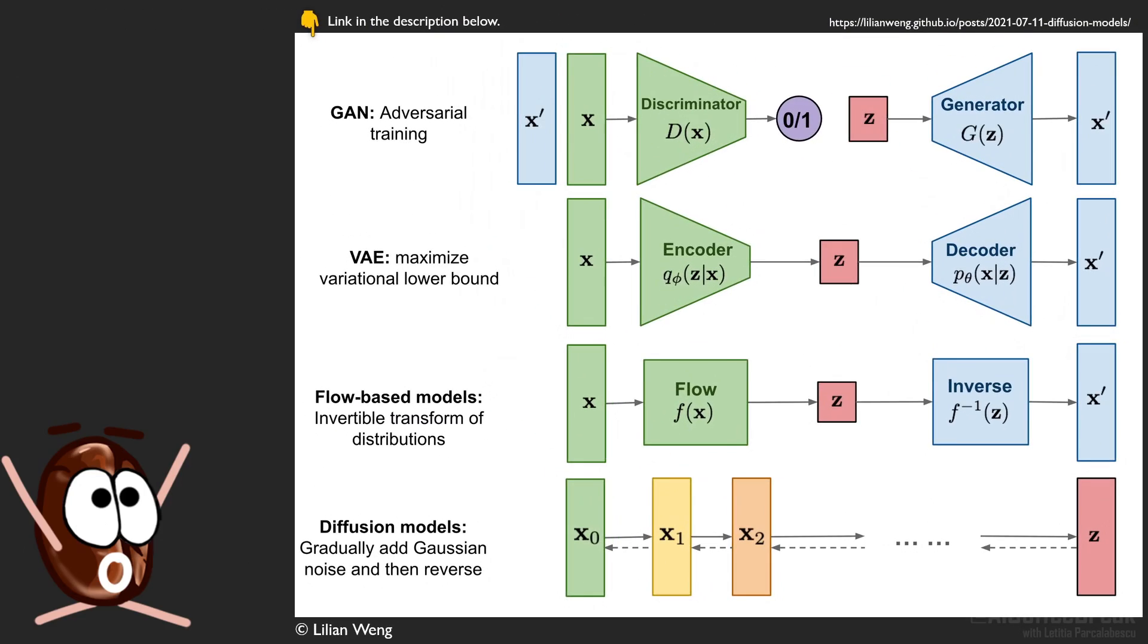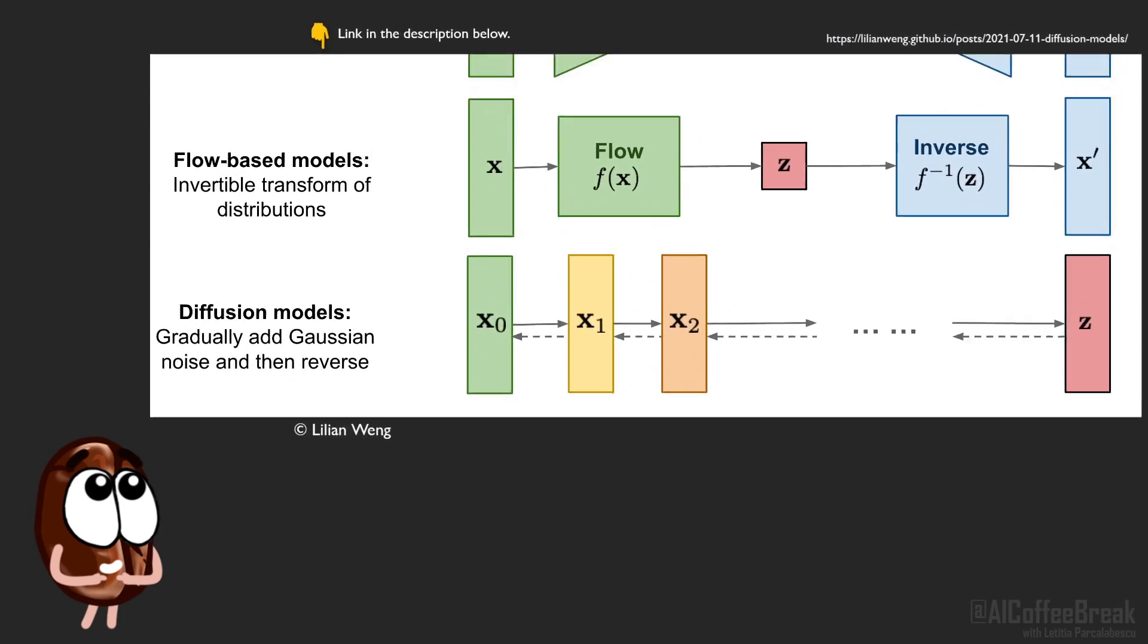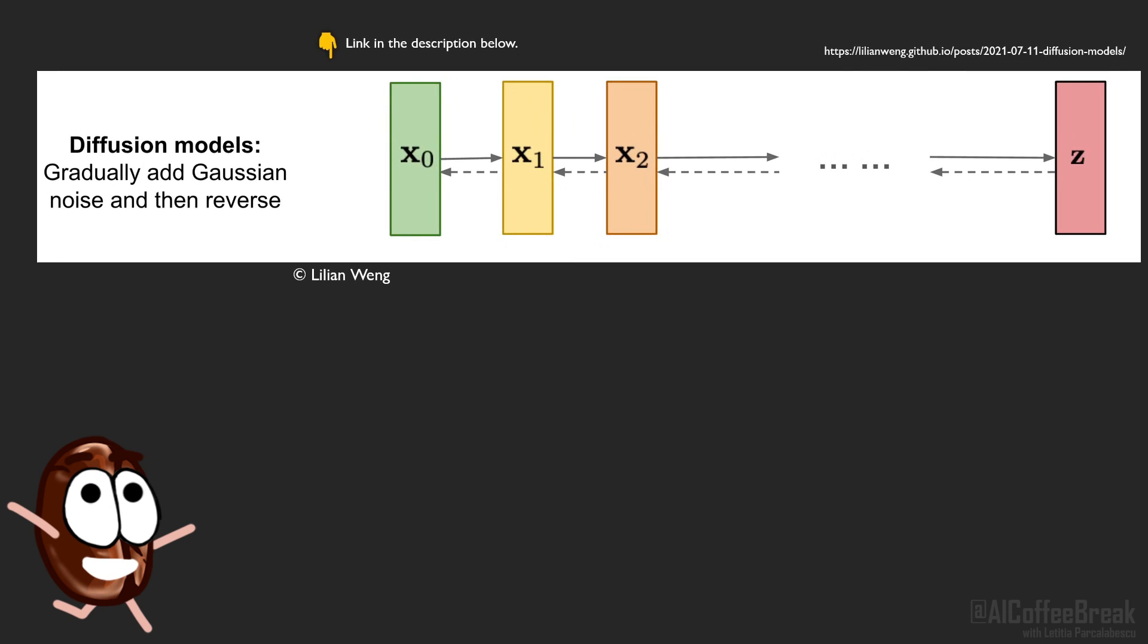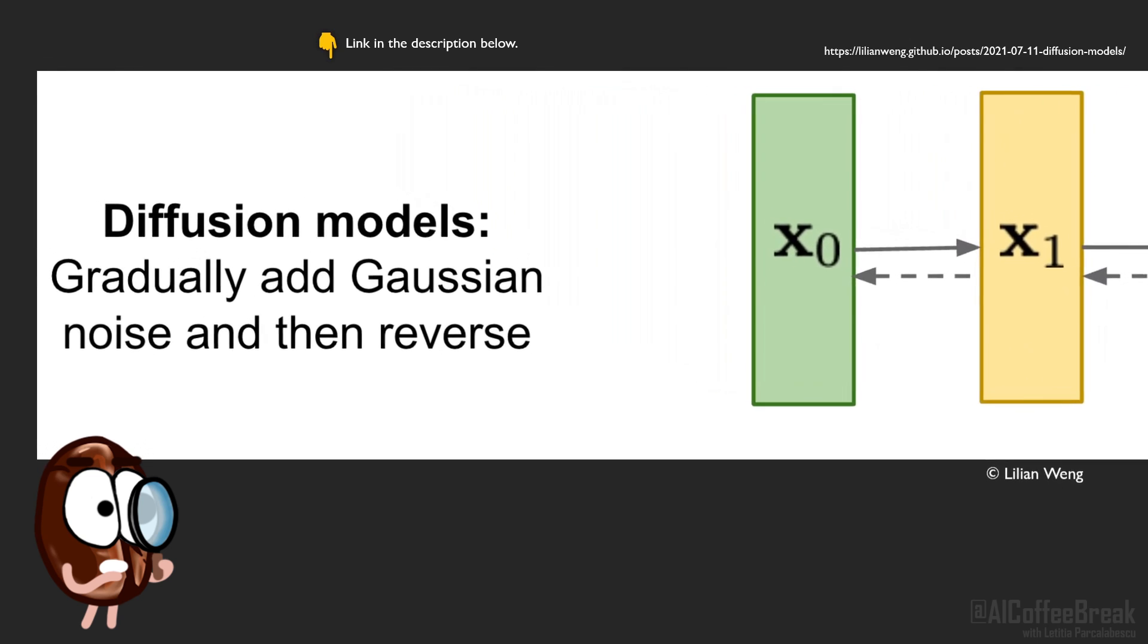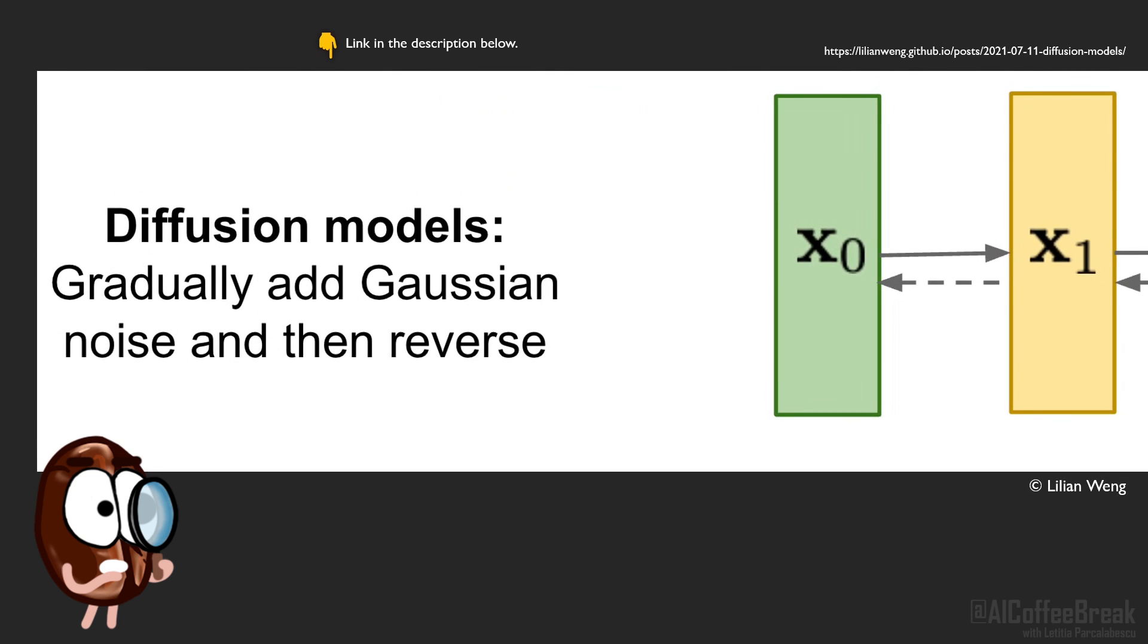And finally, on the generative menu, we get to the model class we are talking about today. Diffusion models. How do they work? We cite from the figure here, diffusion models gradually add Gaussian noise and then reverse. Well, everything is crystal clear. Okay, bye. No, Ms. Coffee Bean, let's break it down a bit. Let's talk about the term diffusion models first. Why are these models called like this?